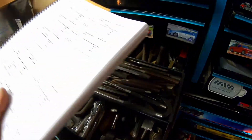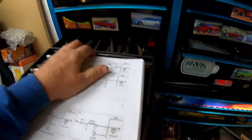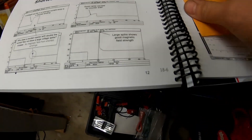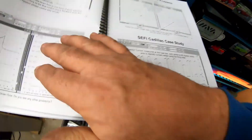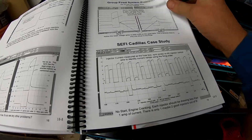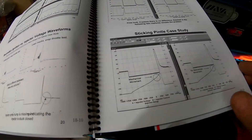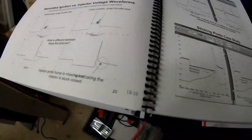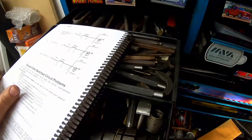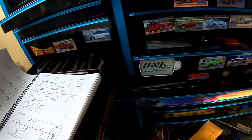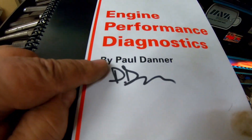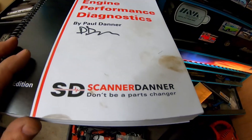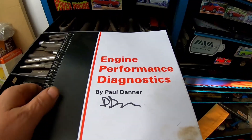This is a pretty good book — gives you all kinds of different scenarios. If you're a lab scope person like me, there are a lot of good waveforms and case studies, pages of just fuel injector and all kinds of other waveforms throughout the whole book, plus wiring schematics and testing points. I won it on Super Mario Diagnostics — it's by Paul Danner, Scanner Danner. He has his own YouTube channel and also does training, so I'll put a link in the description.